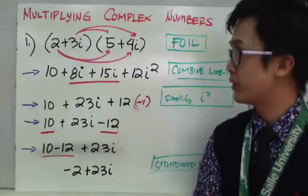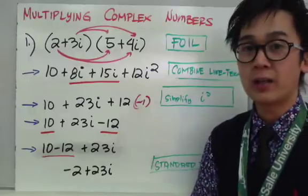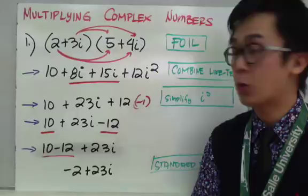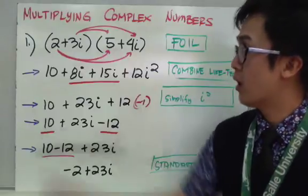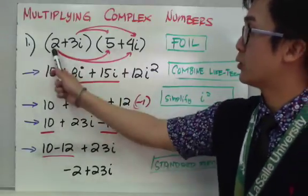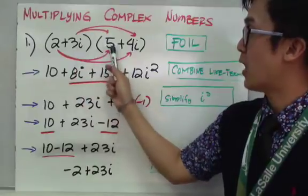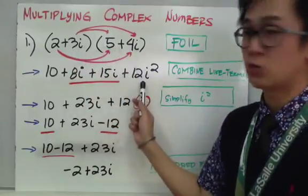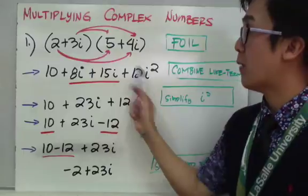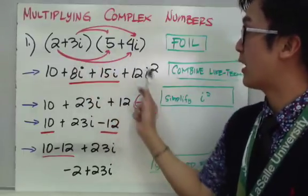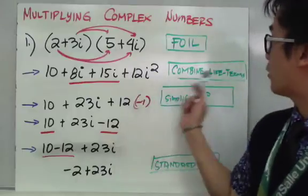Now multiplying two complex numbers together. For example, 2 plus 3i times 5 plus 4i — we'll use the FOIL method, similar to multiplying binomials. First: 2 times 5 is 10. Outer: 2 times 4i is 8i. Inner: 3i times 5 is 15i. Last: 3i times 4i is 12i squared. Watch out for the i squared term — most students forget to multiply i times i and leave the exponent behind.